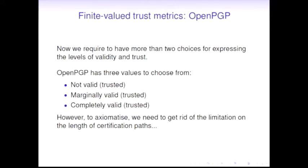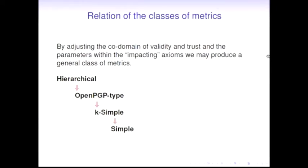Further, we may want to generalize this in terms of the codomain of validity and trust. We have OpenPGP which incorporates three possible values. I won't present the definition and axioms for this - they're pretty much the same. What we basically do is add that third level of validity and trust into the impacting axiom, which makes it a little bit more awkward, but still we need to incorporate that.